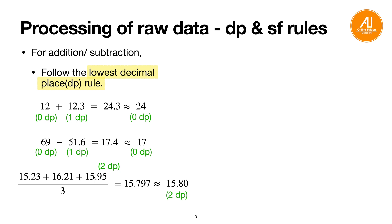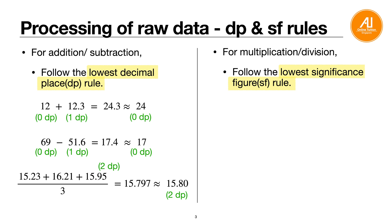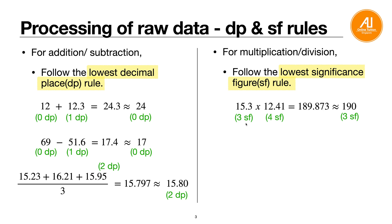For multiplication or division, you follow the lower SF (significant figures) rule. For example, 15.3 × 12.41: 15.3 is 3 SF and 12.41 is 4 SF. You get 189.873 on the calculator, then follow the lower SF which is 3 SF, rounding to 190. You can also apply this rule for calculations in Paper 2.